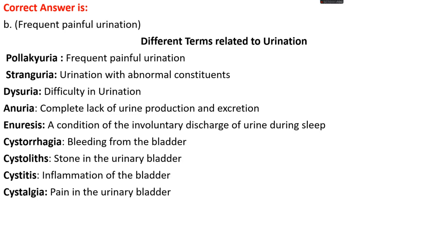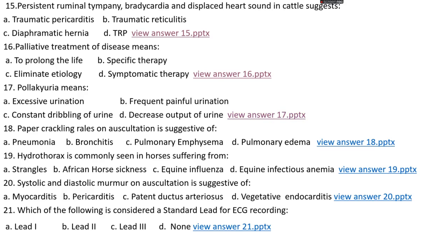Cystorrhagia — bleeding from the bladder; cystolith — stone in the urinary bladder; cystitis — inflammation of the urinary bladder; cystalgia — pain in the urinary bladder.